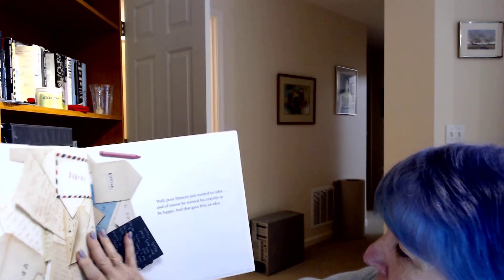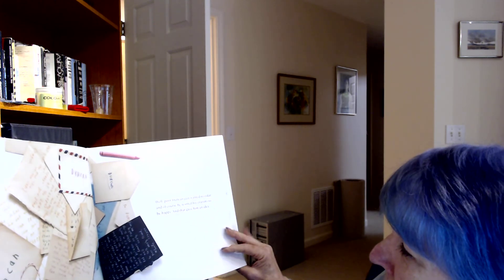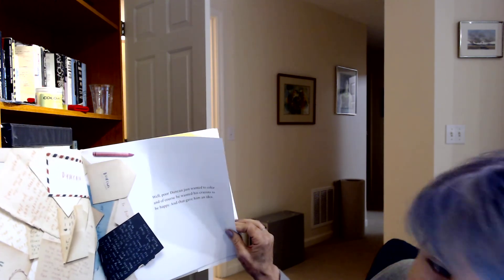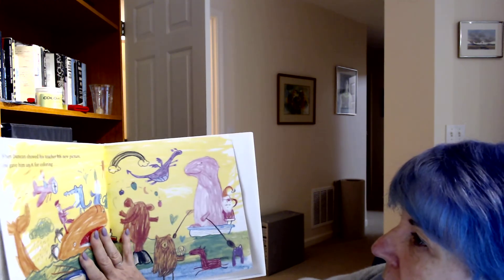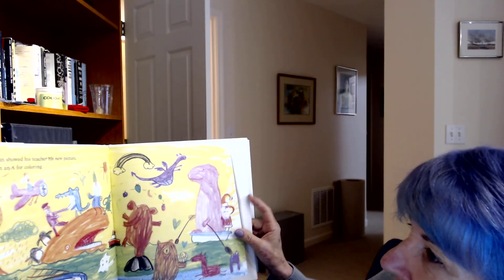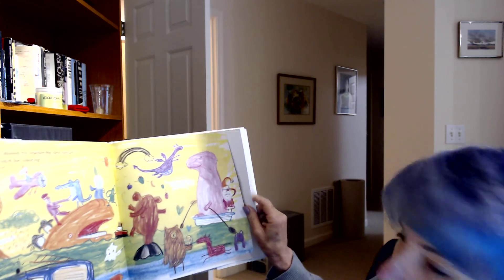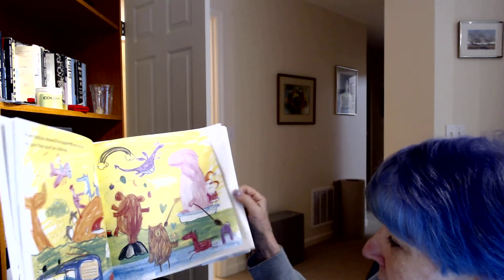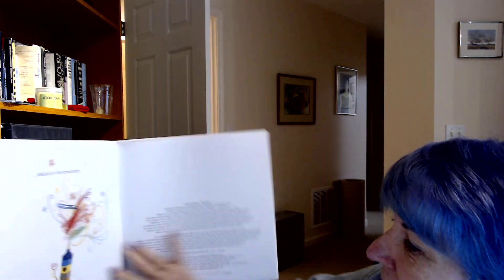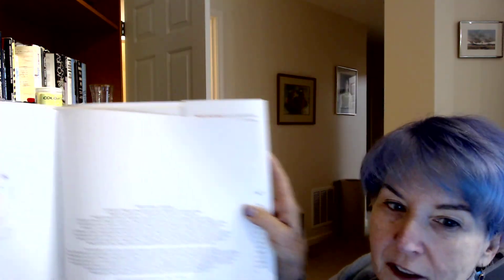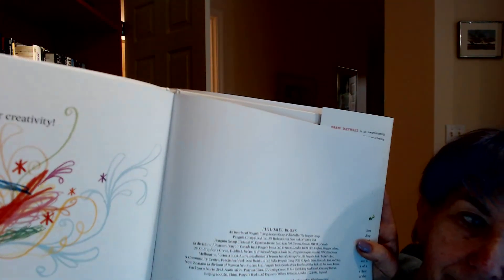Well, poor Duncan just wanted to color. And of course he wanted his crayons to be happy. And that gave him an idea. When Duncan showed his teacher his new picture, she gave him an A for coloring. Can you see his new picture? It's huge and it's great. Can you see it? Oh, I'm going the wrong direction, aren't I? There we go. An A for creativity.